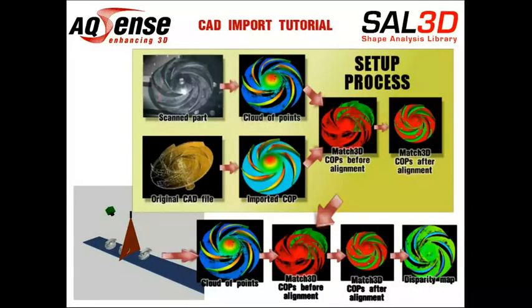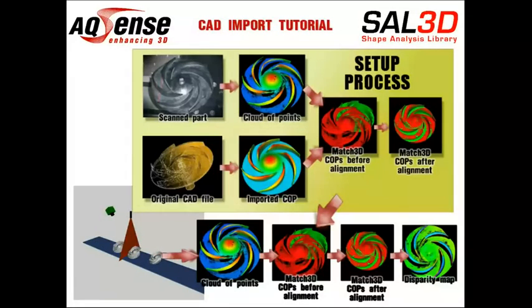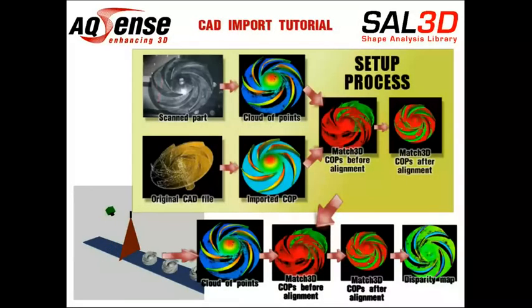First, we will use the SAW3D CAD import tool with the CAD file of the object we will scan. In this example, a SPA turbine from the company ESPA. This will allow us to set up the quality control application based on the surfaces of the CAD we are interested in, exporting them as clouds of points of ideal scans.